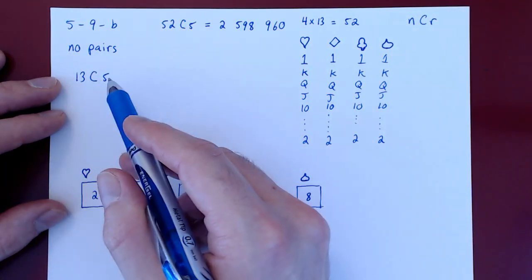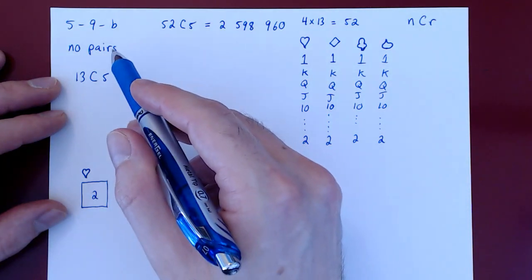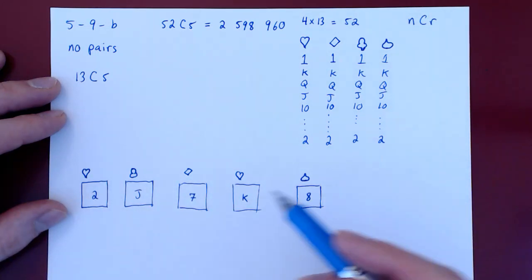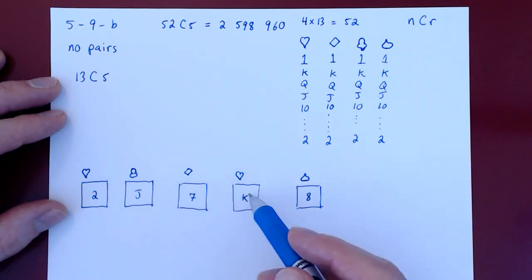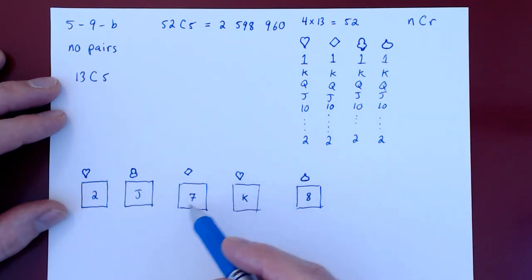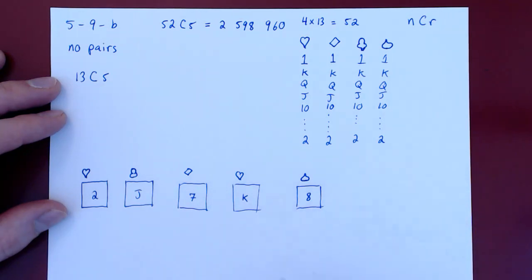And again, we're using combinations. Clearly here, this is unordered. If I swap the two and the jack, that still is a valid hand with no pairs. It still is the same hand. If I order my cards differently, it's still fundamentally the same hand of five cards.